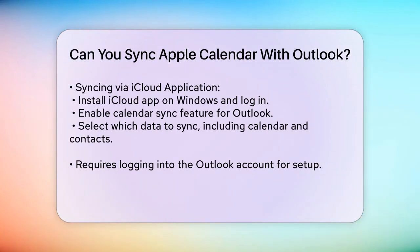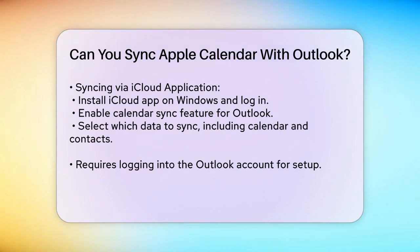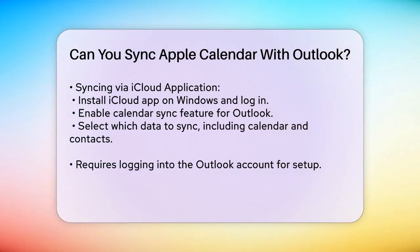Another method involves using the iCloud desktop application. Install the iCloud app on your Windows machine, log in to your iCloud account, and enable the sync feature for your calendar. This will sync your iCloud calendar with your Outlook account. You can select which data to sync, including your calendar, contacts, emails, and tasks. This method requires you to log in to your Outlook account to complete the setup.